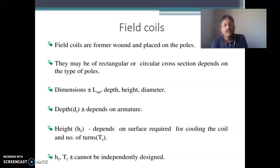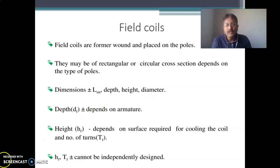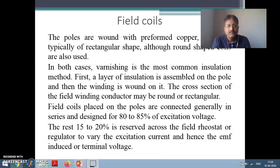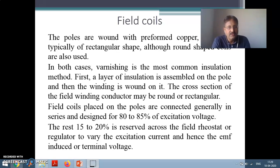HF and TF cannot be independently designed — they depend upon each other. These field coils are generally made up of copper. The most common insulation is varnish. The cross section of the field winding conductors is either round or rectangular.